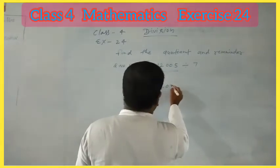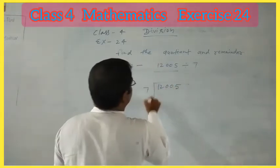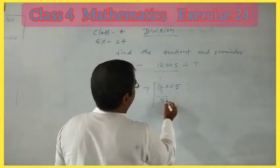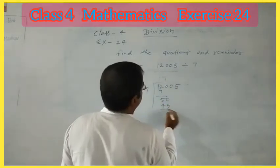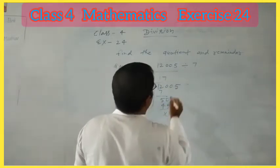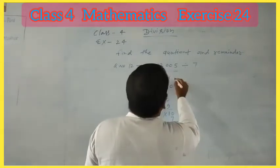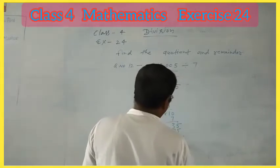So we write 12,005 and divide by 7. 7 into 7 is 1, remainder 5. 7 into 49 is 7, remainder 1. 7 into 7 is 1, remainder 0. 7 into 35 is 5, remainder 0. 7 into 5 is 0, remainder 5.